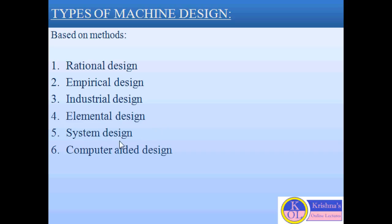The fifth type of design is system design. System design generally represents the designing of a whole or complete mechanical system. For example, the designing of automobiles or vehicles is considered system design.